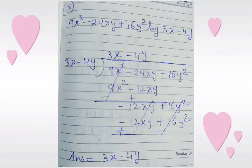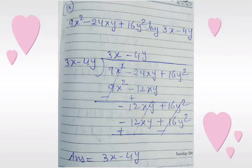Next: 9x squared minus 24xy plus 16y squared divided by 3x minus 4y. We will multiply 3x minus 4y with 3x and get 9x squared minus 12xy. After changing the sign, we cancel the first term — plus 9x squared minus 9x squared — and after solving the second term we get minus 12xy.